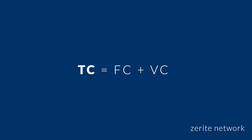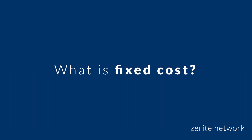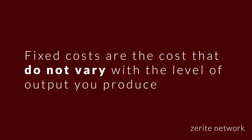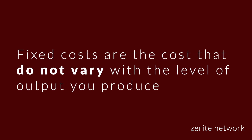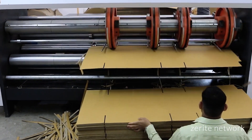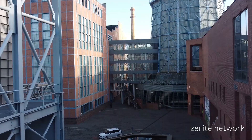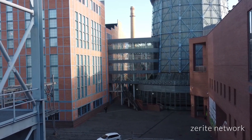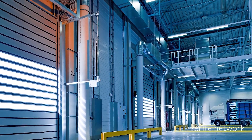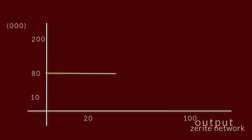If total cost equals fixed cost plus variable cost, then what is fixed cost? Fixed costs are the costs that do not vary with the level of output you produce. For instance, the rent of a particular room doesn't change with the level of units you produce in that room. Basically, a large warehouse with less items in it just means that you are paying rent and storing emptiness. Meaning if your fixed cost is $80,000, then the output level will not change it.